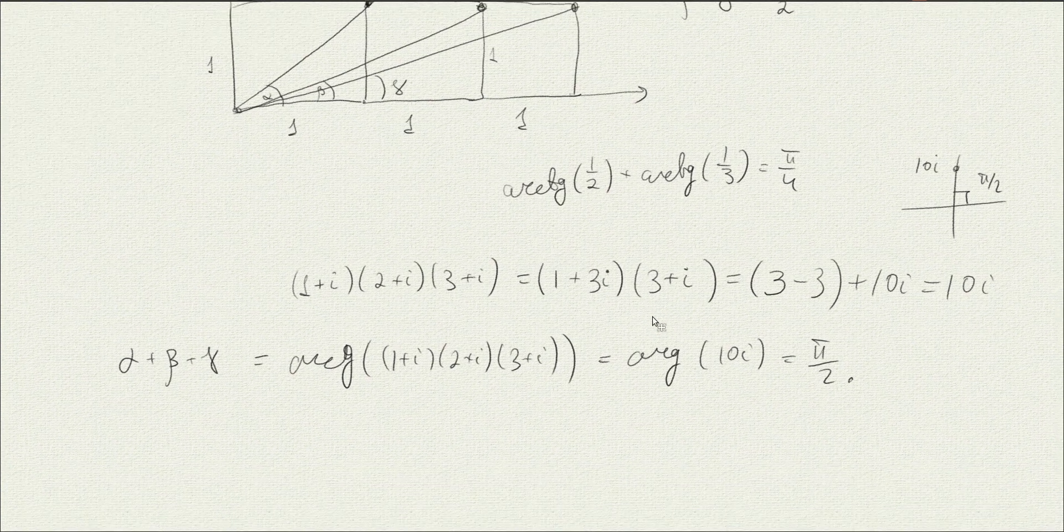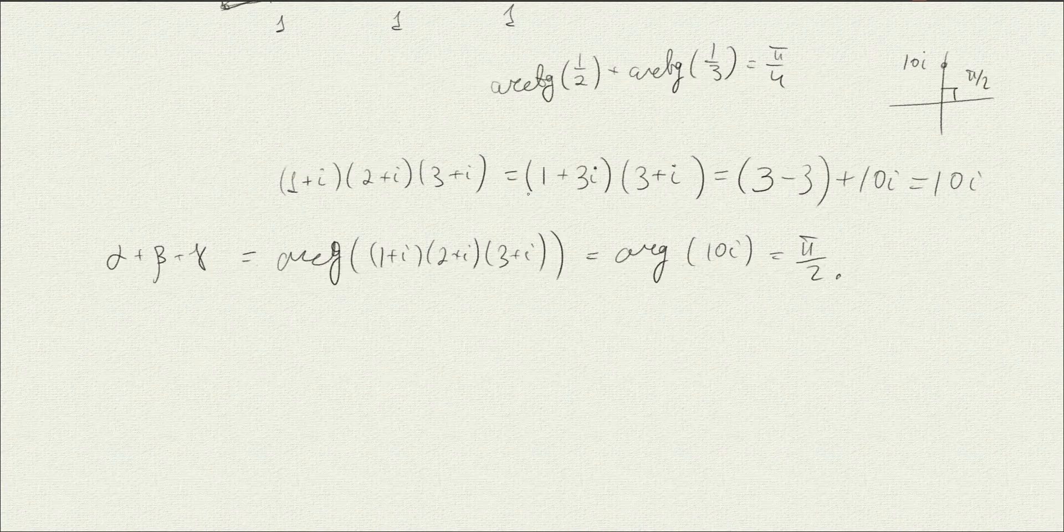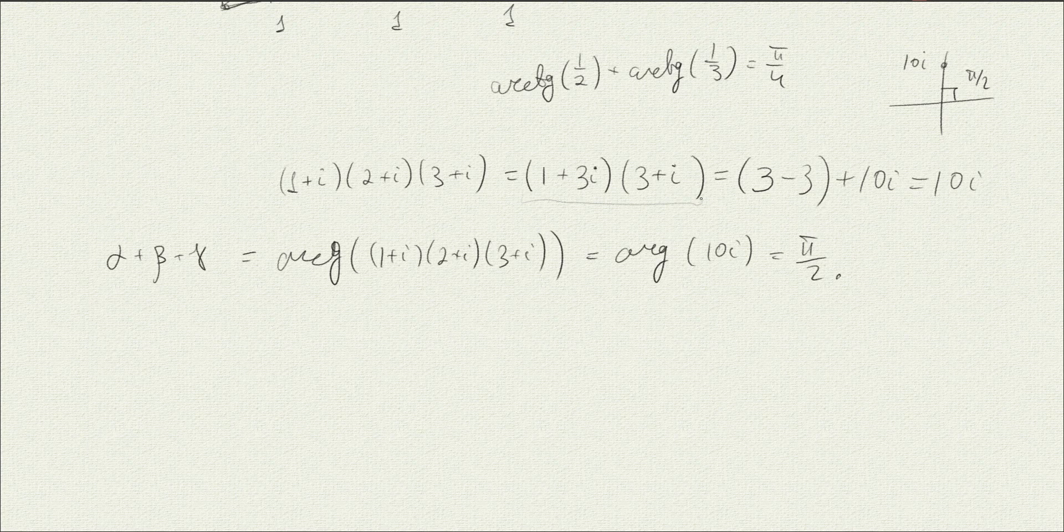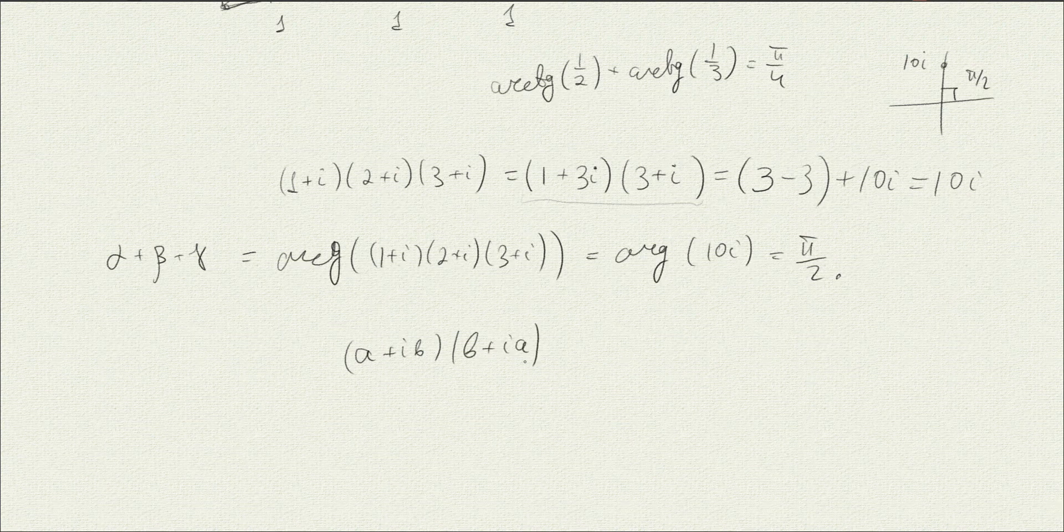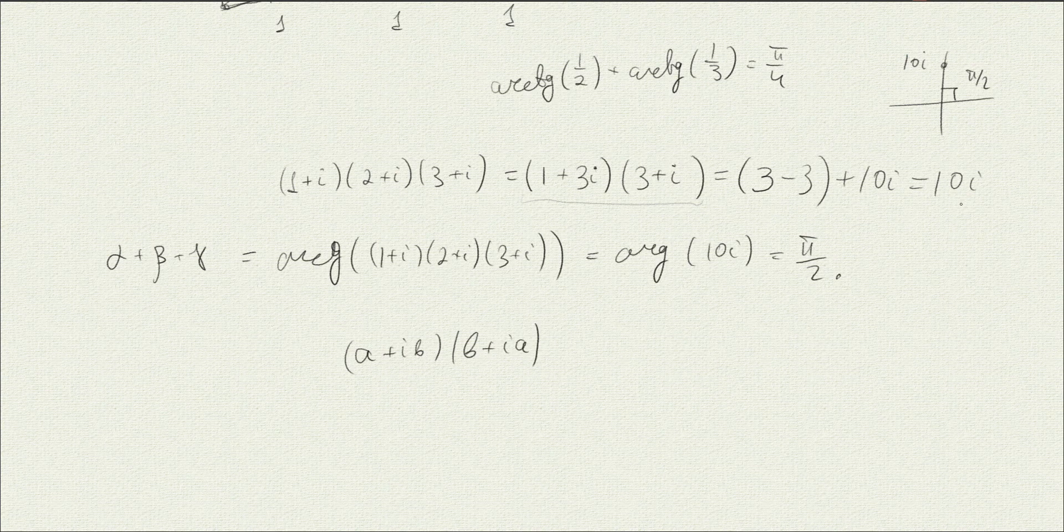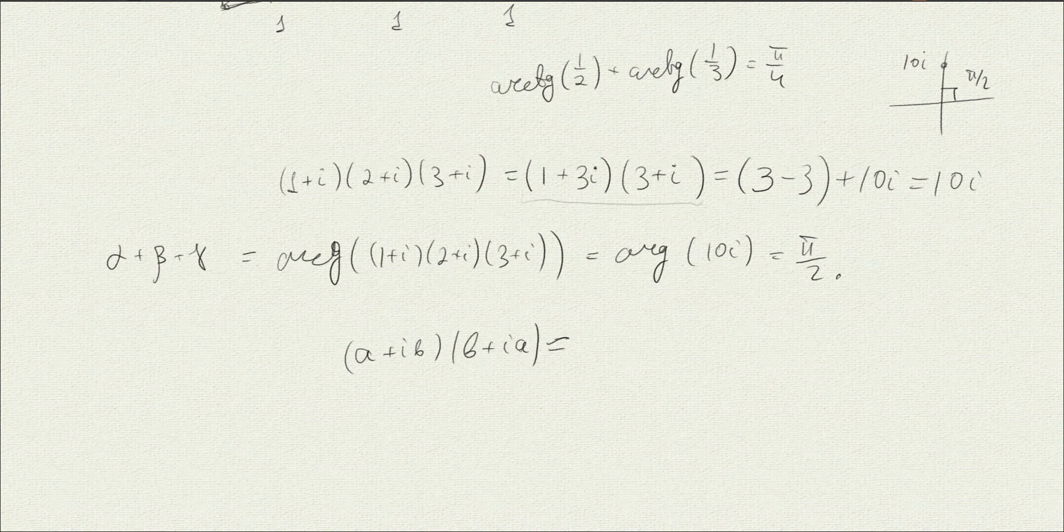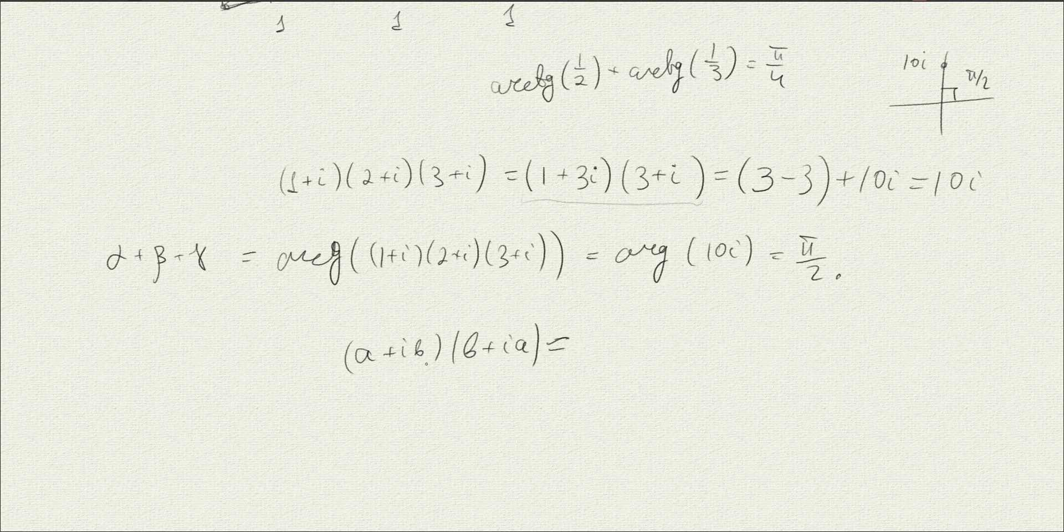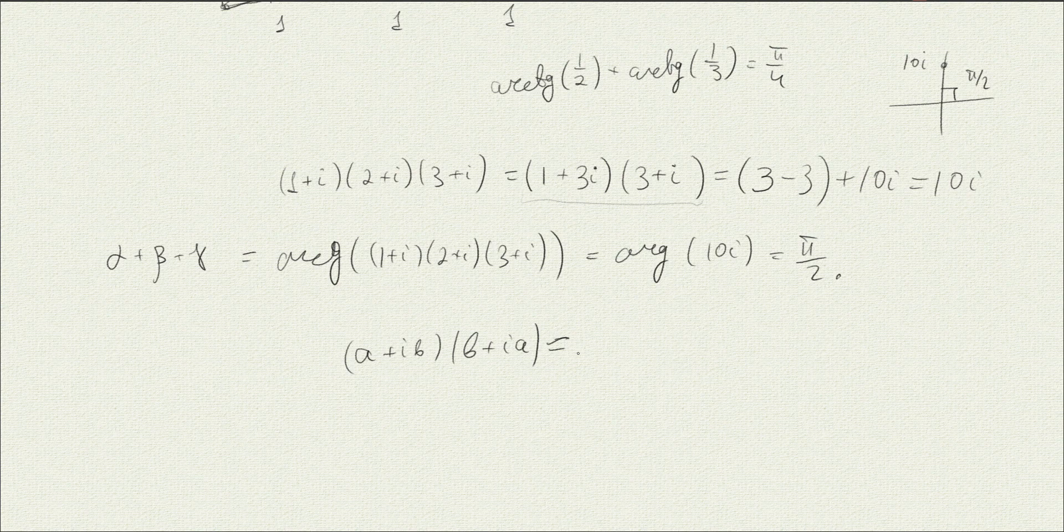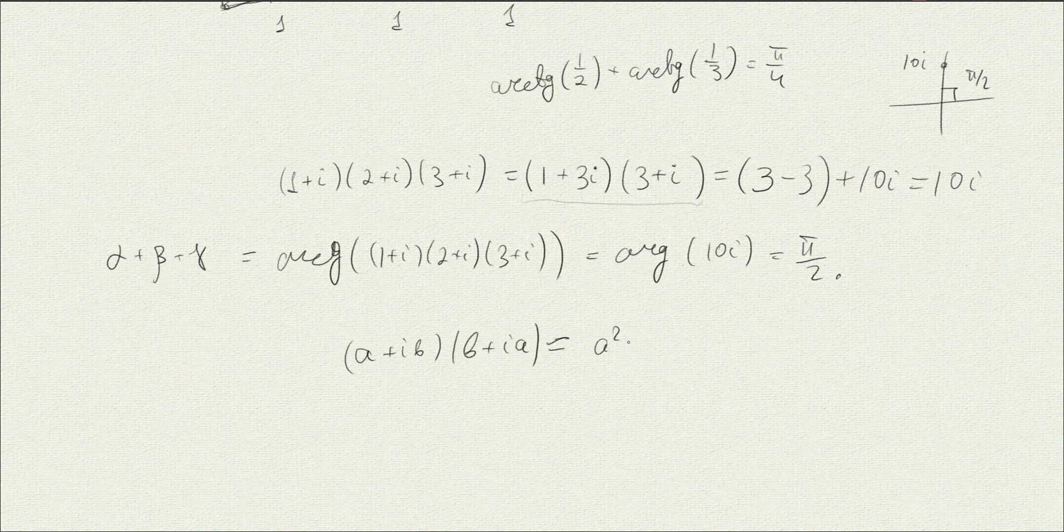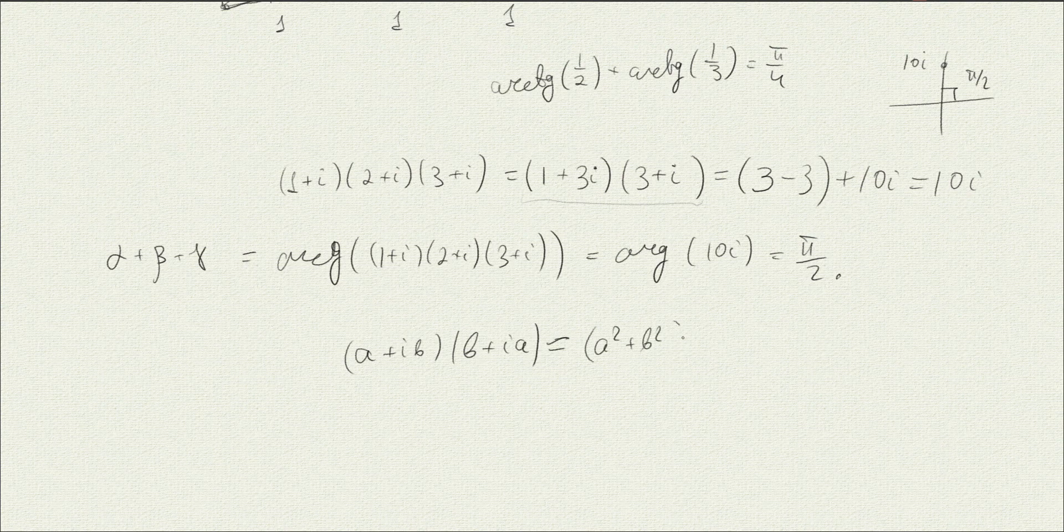And one nice observation here, just a geometrical one, that whenever we multiply a number a plus ib times b plus ia, we are always going to get a purely imaginary number, because as we have seen, it's going to have 0 real part, and the imaginary part is going to be actually a squared plus b squared i.